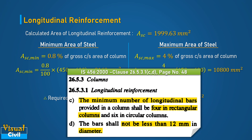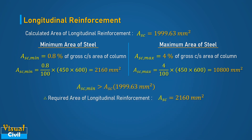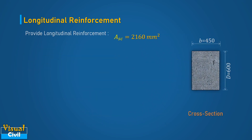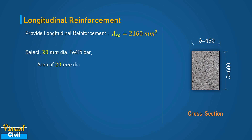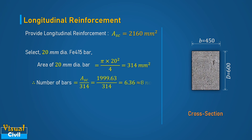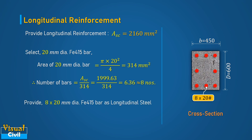As per Clause 26.5.3.1(c) and (d), the minimum number of bars in a rectangular column is 4 and the minimum bar diameter is 12 mm. Select a bar diameter of 20 mm, with a cross-sectional area of 314 mm². Computing the number of bars and rounding up to an even number, provide 8 numbers of 20 mm dia bars as longitudinal reinforcement. The total area of steel provided is 2512 mm².